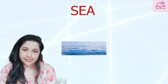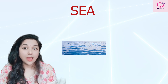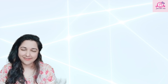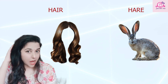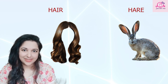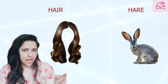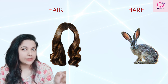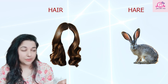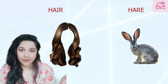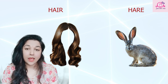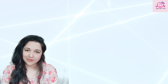The second example is 'hair' and 'hare'. My hair is brown. That hare is gray in color because that hare is a big rabbit.